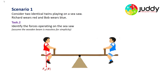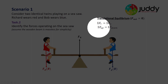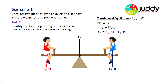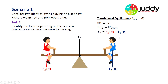Likewise Bob has a gravitational force pulling him down towards the earth, also acting on the seesaw. There is also a reaction force at the base pushing up. In translational equilibrium — meaning a balanced net force of zero — the forces left and right are equal, and the sum of the forces up equals the sum of the forces down. Here the only force up is the reaction force, and the two forces down are gravity on Richard and gravity on Bob.